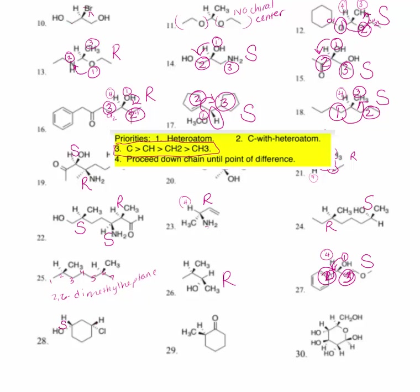For the second asymmetric center of number twenty-eight: chlorine is priority number one. Going down the chain on both sides — CH2, CH2 — finding the atom of difference. The atom of difference makes this side priority number two and this side priority number three. We rotate counterclockwise, but since H is coming out towards me, this is an R configuration.